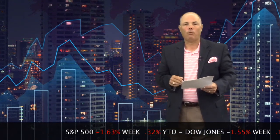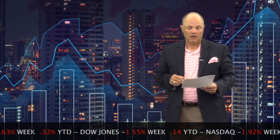First up, S&P down 1.63% for the week, has gone negative again at 0.32% down. Dow down 1.55% for the week and down 0.14% year to date. And NASDAQ continues to be the big lagger, down 1.92% for the week and down 5.98% year to date.